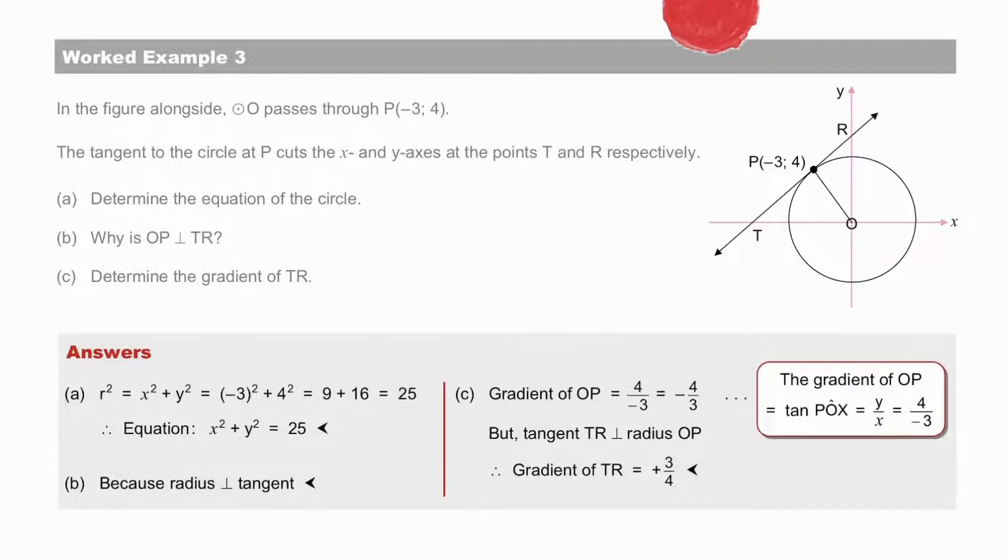OP perpendicular to TR, the radius is perpendicular to the tangent. Finding the gradient of TR, the tangent. Well, the gradient of the radius OP is equal to the tan of the obtuse angle of inclination, 4 over minus 3. And therefore, the gradient of the tangent TR is plus 3 over 4.